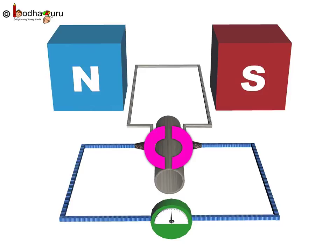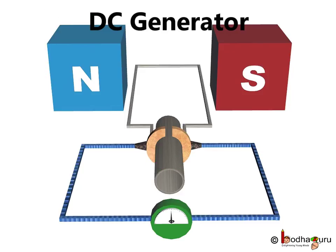In case you forgot, a device that reverses the direction of flow of current through a circuit is called a commutator. Thus, an electric generator that produces direct current is called a DC generator.